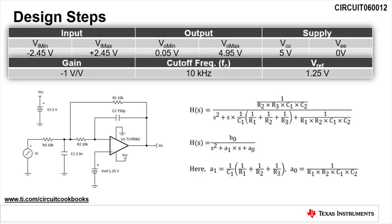This slide depicts the design goals and transfer function of the circuit. The input signal ranges from negative 2.45 volts to positive 2.45 volts, and the output swing range is from 50 millivolts to 4.95 volts.